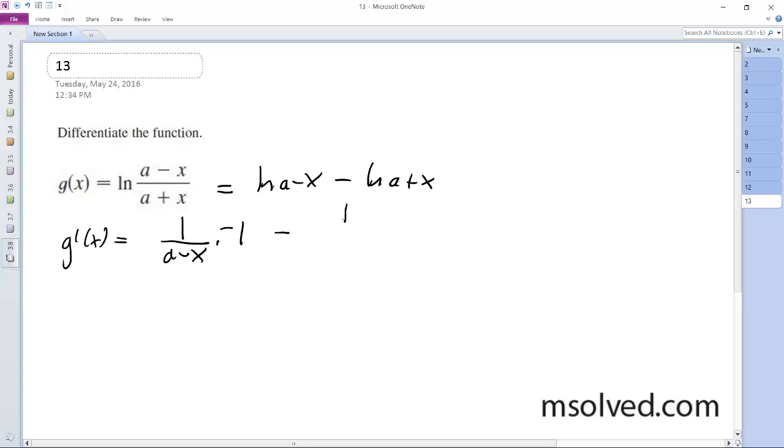Minus 1 over (a plus x) times 1, so g prime of x is going to be equal to negative 1 over (a minus x), minus 1 over (a plus x).